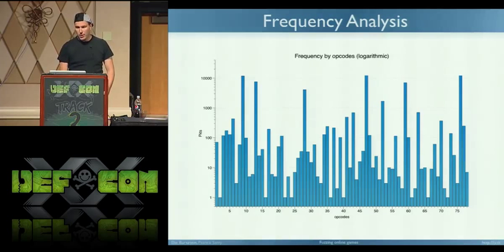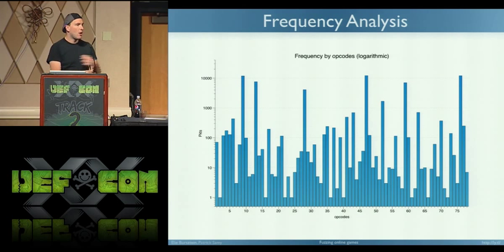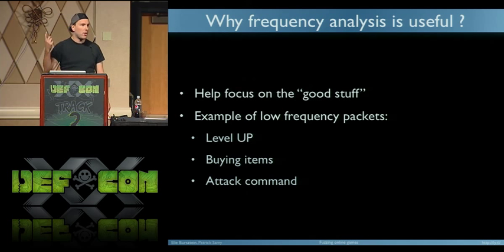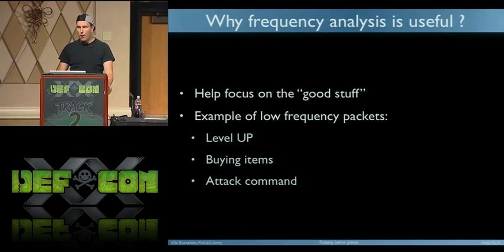You can start with frequency analysis. On a log-scale plot by opcode, the tallest bars are very frequent opcodes — mainly pings and location updates — which are not what you're interested in. On the other hand, there's a handful of opcodes that are very, very rare, and these are the ones you actually care about. When you level up you don't level up every second — you might have four or five of those in a trace. Same for buying items, or attacking. So if you discard the very frequent opcodes you end up with a small, manageable set to work on.